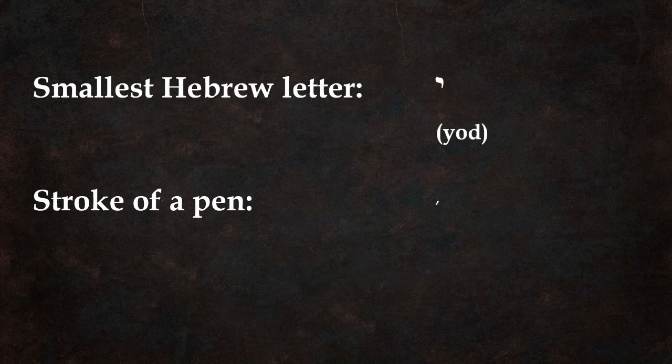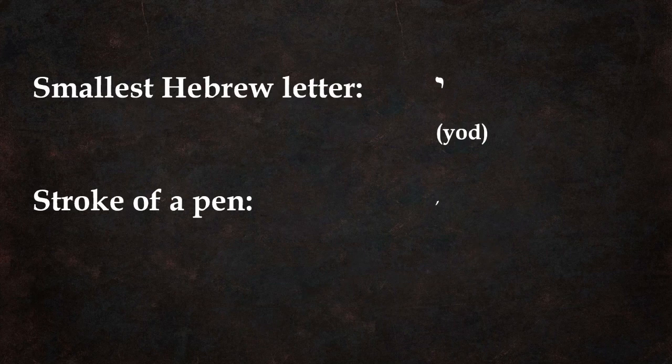But a small stroke of a pen — you can imagine how small this would be. We would probably talk about it in terms of, like, if you look at the handout I've given you, at the word Matthew at the top — do you see how there are little strokes at the top of each line and bottom of each line? Those are called serifs. They're not required when you're writing a letter of the alphabet, but they actually make the letter a little bit easier to recognize.